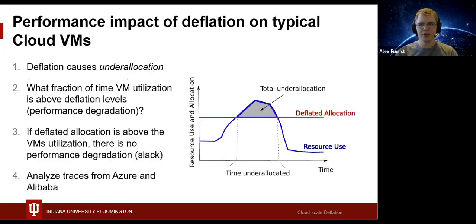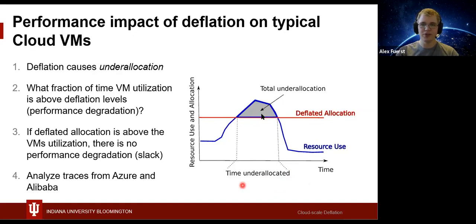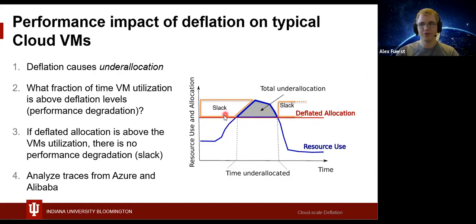First, we look at the performance impact on typical cloud VMs and how it is computed. Deflatable VMs will naturally suffer under-allocation, where the resource allocation falls below the original maximum. The figure depicts the VM's resources in blue rising over time above the deflated allocation shown in red. Such under-allocation at a time of high utilization is when performance degradation occurs. We can use these graphs to compute the impact — or lost allocation above the red line — as lost work throughput. Inversely, if the VM isn't using resources that were deflated, we have simply reclaimed slack resources with no performance degradation.